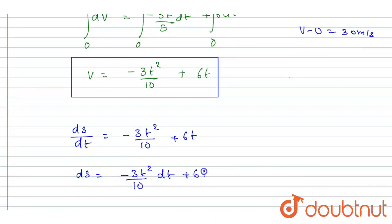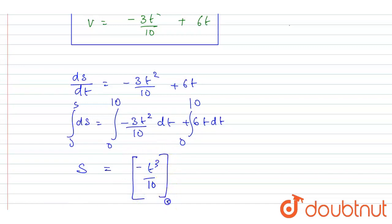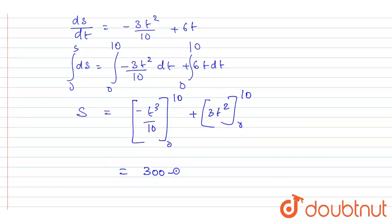Integrating from 0 to 10 seconds, after putting in the limits, the displacement in the first 10 seconds is: t squared by 2 gives 3t squared, and the t cubed term gives 100, so the result is 300 minus 100, which equals 200 meters. So the car traveled 200 meters in the first 10 seconds.